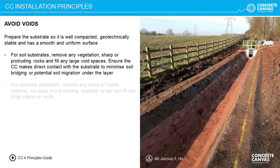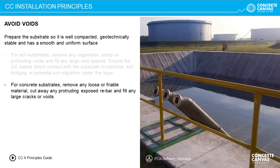Prepare the substrate so that it is well compacted, geotechnically stable and has a smooth and uniform surface. For soil substrates, remove any vegetation, sharp or protruding rocks and fill any large void spaces. Ensure the CC makes direct contact with the substrate to minimize soil bridging or potential migration under the layer. For concrete substrates, remove any loose or friable material and ensure to cut away any protruding exposed rebar, which may damage the PVC membrane backing of concrete canvas.